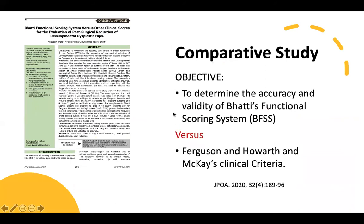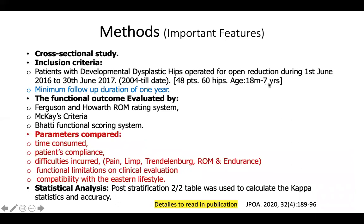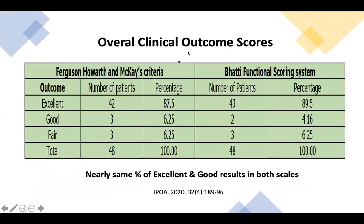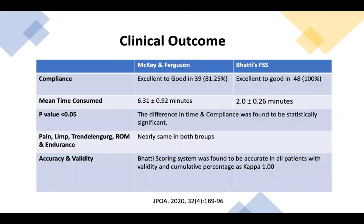A comparative study was done to determine the accuracy and validity of the Bhatti functional scoring system against McKay and Ferguson. 48 patients with 60 hips, ages between 18 months and 7 years, were evaluated for time consumed, patient compliance, difficulties incurred, and functional limitations. Overall scores were comparable in both. 81% of patients were able to comply with McKay and Ferguson, while 100% complied with Bhatti's system. McKay and Ferguson took an average of six minutes to perform, whereas the Bhatti functional score took only two minutes. The Bhatti scoring system was found to be accurate in all patients with validity and cumulative percentage as kappa 1.0.